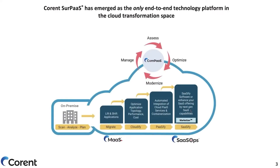Before we get started, let me introduce what Corent does. We offer an end-to-end technology platform to take you through the cloud transformation journey. It starts with scanning and assessment of your on-prem environment and tools to help you create a migration plan. It is integrated with a migration tool that helps you with lift and shift to the cloud, and you can also make decisions whether you want to optimize your applications to something more cloud-centric, or move them directly to PaaS services, pacify them, or containerize them.